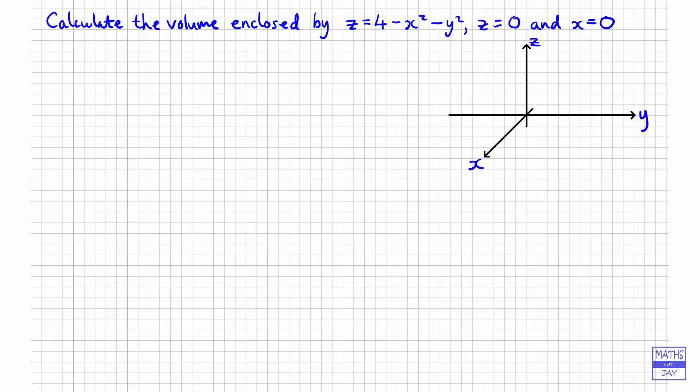So we've got the x-axis coming out of the screen towards us, and let's think about this. If we think about what happens when x is 0, well z is 4 minus y squared, so that's really a kind of an n-shaped parabola. So let's just have a look at doing that first of all.